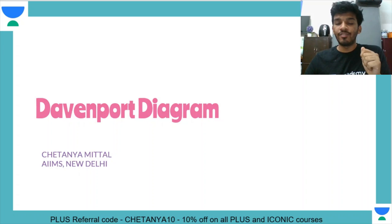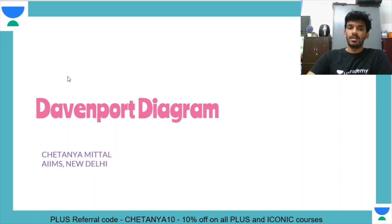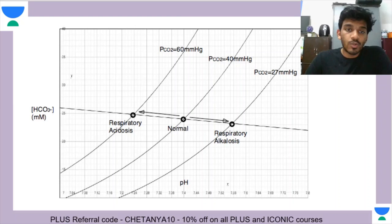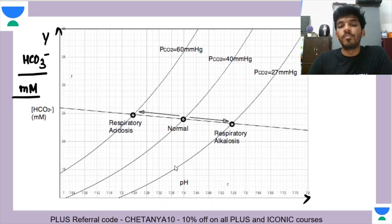We'll talk about how this is useful for your Neat PG preparation. Let's call it the acid-base balance diagram. First, let's understand what is on the Y-axis and what is on the X-axis. On the Y-axis you have the plasma concentration of bicarbonate in millimolars. That is the entity on the Y-axis.